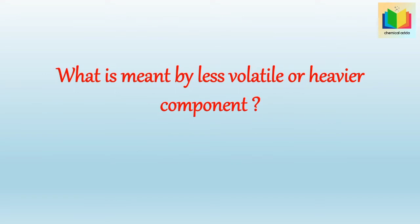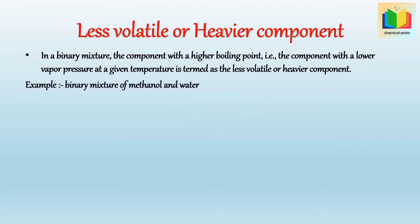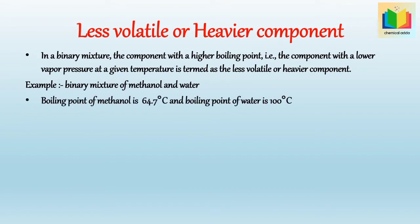What is meant by less volatile or heavier components? In a binary mixture, the component with a higher boiling point — that is, the component with a lower vapor pressure at a given temperature — is termed as the less volatile or heavier component. In a binary mixture of methanol and water, the boiling point of methanol is 64.7°C and the boiling point of water is 100°C. As the boiling point of water is more than methanol, water is the less volatile or heavier component.